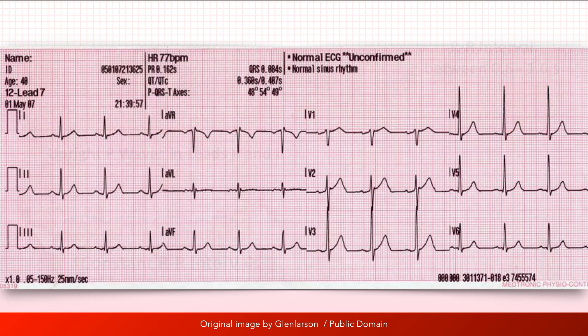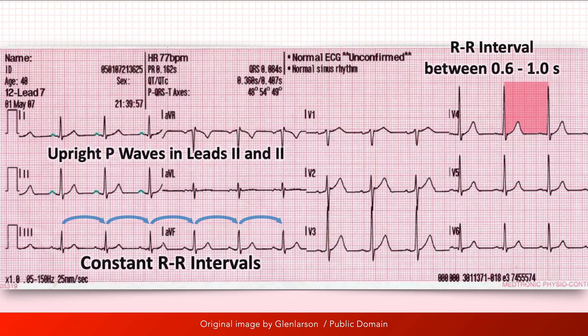So to quickly recap: with sinus rhythm, an upright P wave of constant morphology precedes every QRS complex, with a regular heart rate between 60 to 100 beats per minute.